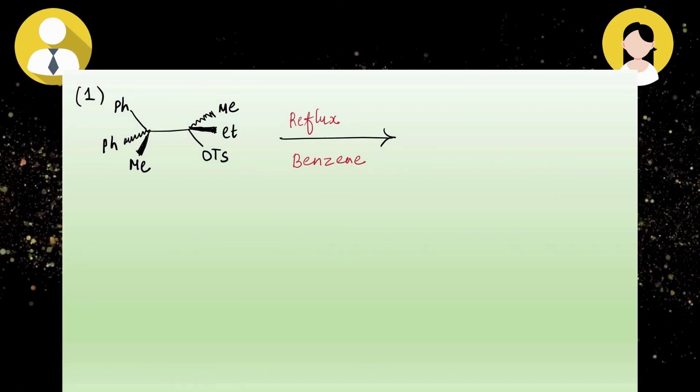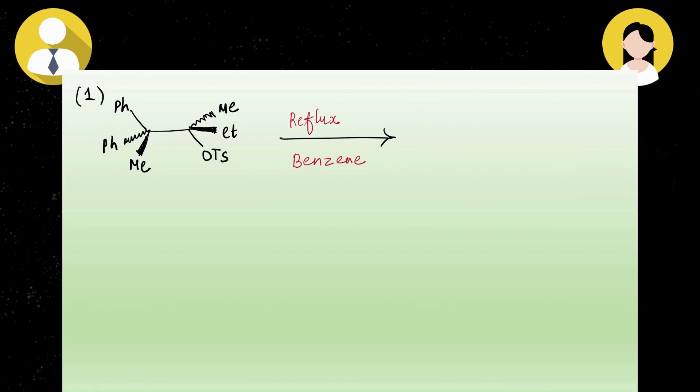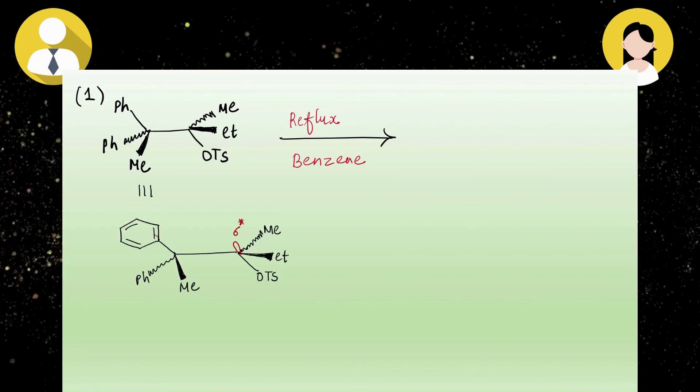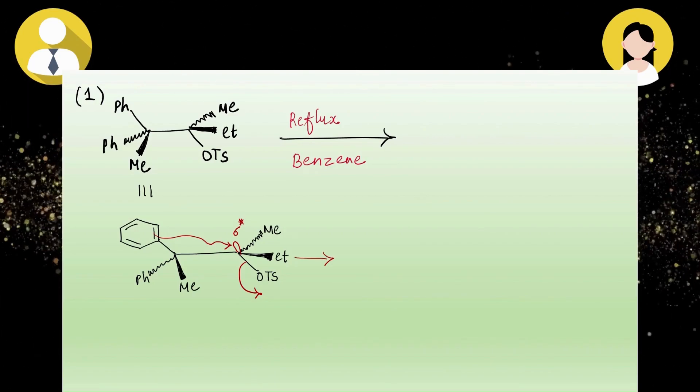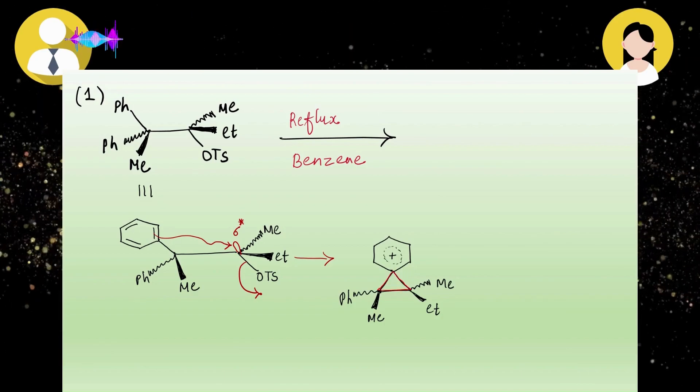He told me to process this reaction through its mechanism. I think the tricky part of this question was the closed form of the phenyl ring—he wanted me to guess this reaction. I started by writing the phenyl ring in its open form, and then attack of pi electrons of the phenyl ring at the anti-bonding orbital of the carbon-OTs bond, followed by leaving of the OTs group. This type of intermediate is formed.